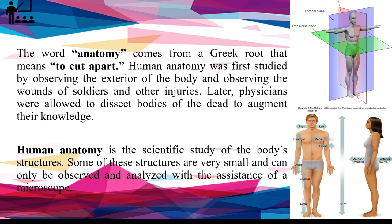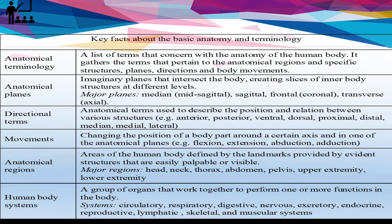The upper picture illustrates the anatomical plane — we have the sagittal, coronal, and transverse plane. The picture below illustrates anatomical position — we have superior, inferior, anterior, posterior, distal, and medial. Anatomical terminology is a list of terms that concern the anatomy of the human body. It gathers the terms that pertain to anatomical regions and specific structures, planes, directions, and body movements.